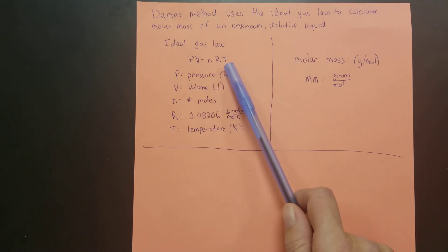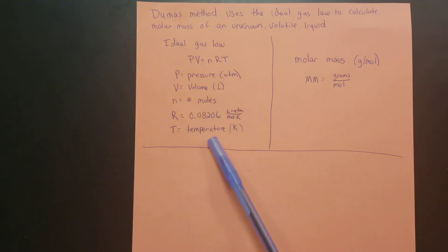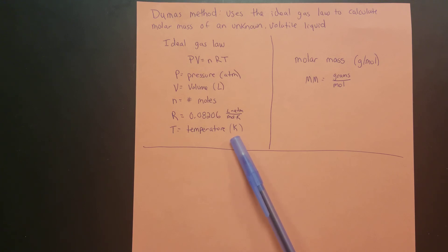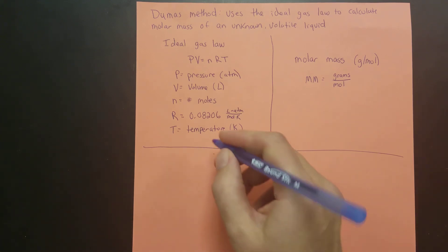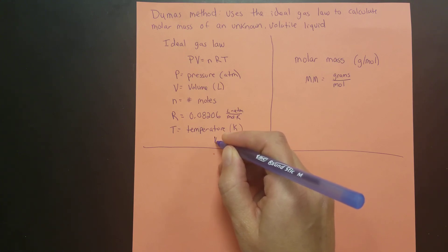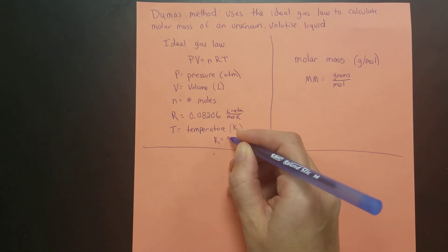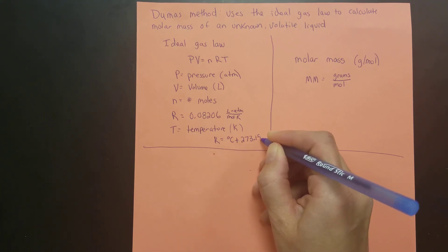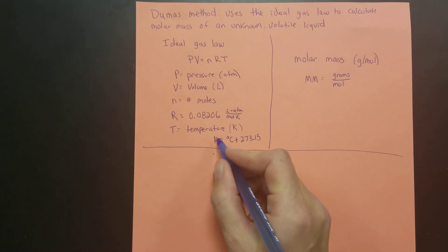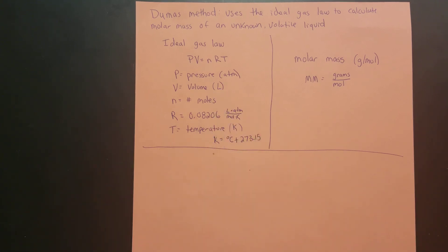The last variable, T, stands for temperature and needs to be measured in Kelvin. In lab we usually measure temperature in degrees Celsius, so it will need to be converted to Kelvin. To do that, take the temperature in degrees Celsius and add 273.15 to it. The Kelvin amount is what you'll plug into the equation.